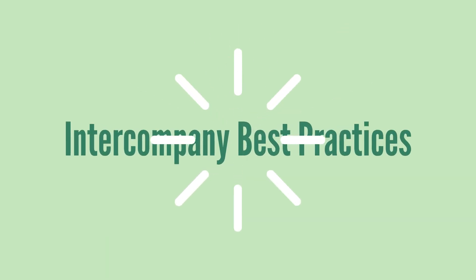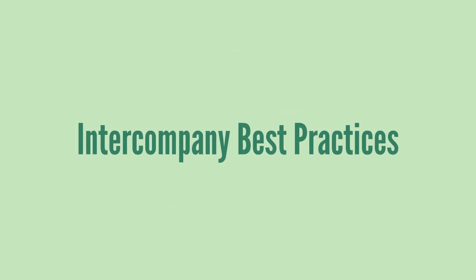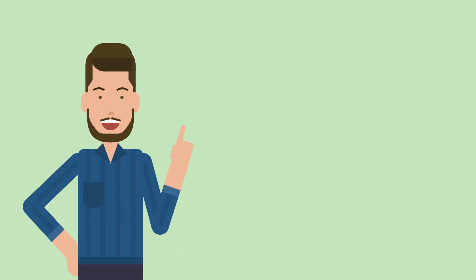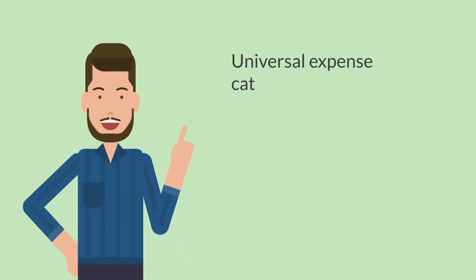Finally, you should be aware of some best practices if you're going to use the Intercompany Time and Expense feature. The main idea is that if you want something to work for intercompany transactions, it needs to be available to both subsidiaries involved. You should use expense categories and service items that both the customer and the employee subsidiary have access to.